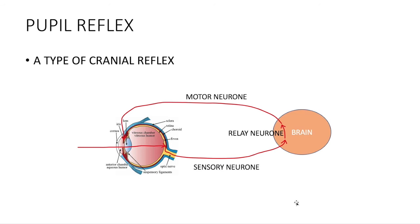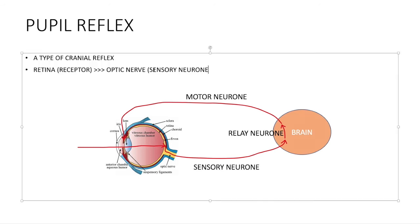Relay neuron in the brain sends the signal from the sensory neuron to the motor neuron of the iris. And the iris is the effector. It will carry out the actions accordingly to the situation. This is the reflex arc of the pupil reflex.